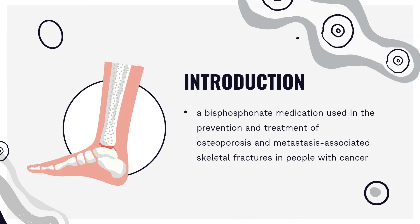Ibandronic acid is a bisphosphonate medication used in the prevention and treatment of osteoporosis and metastasis-associated skeletal fractures in people with cancer. It may also be used to treat hypercalcemia. It is typically formulated as its sodium salt, Ibandronate sodium. It was patented in 1986 by Berger-Manheim and approved for medical use in 1996.